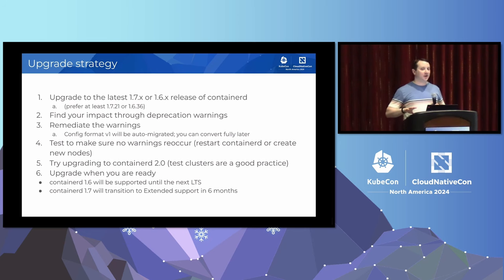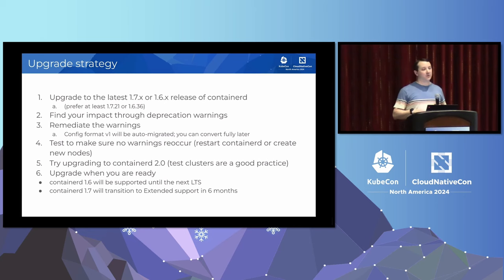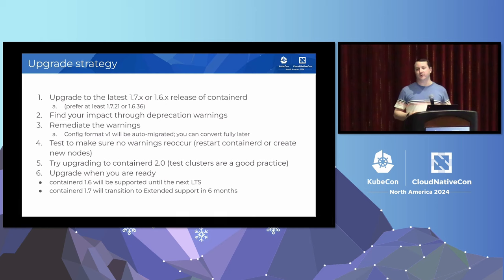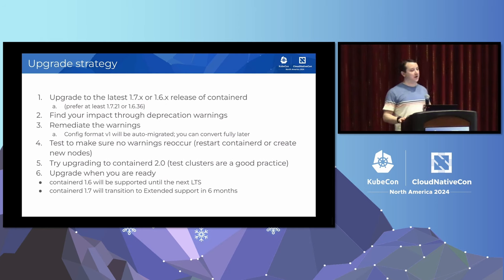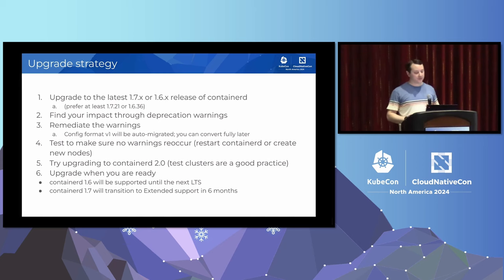I want to highlight that ContainerD 2.0 just came out last week. There's no immediate rush to upgrade — of course you can if you're excited about the new features. ContainerD 1.6 and 1.7 are going to be around for a while. ContainerD 1.6 is a long-term supported release, and we'll be continuing to apply bug fixes, security patches, performance fixes, and making sure it works with newer versions of Kubernetes all the way until we have a replacement long-term supported version. We haven't figured out what that's going to be yet, so for the foreseeable future 1.6 is going to stay around, just without the new features in 2.0.